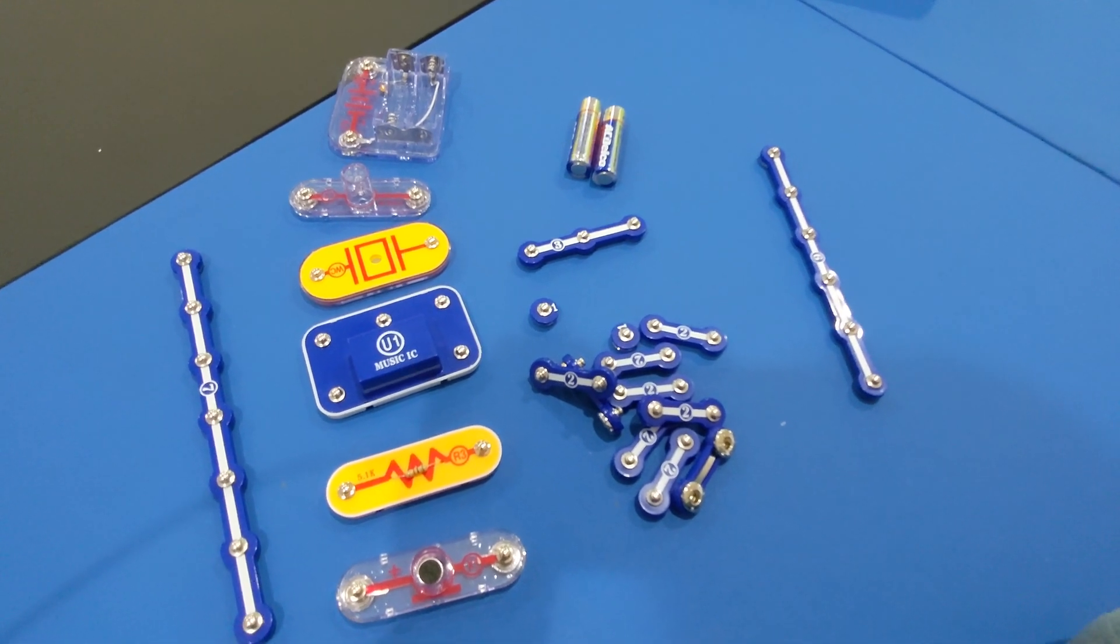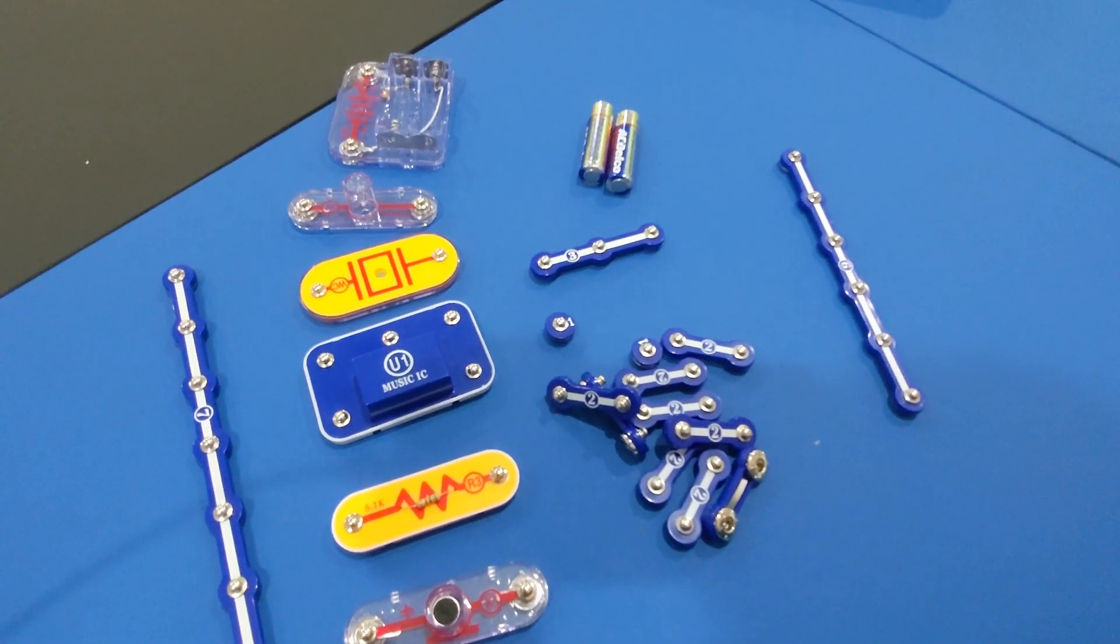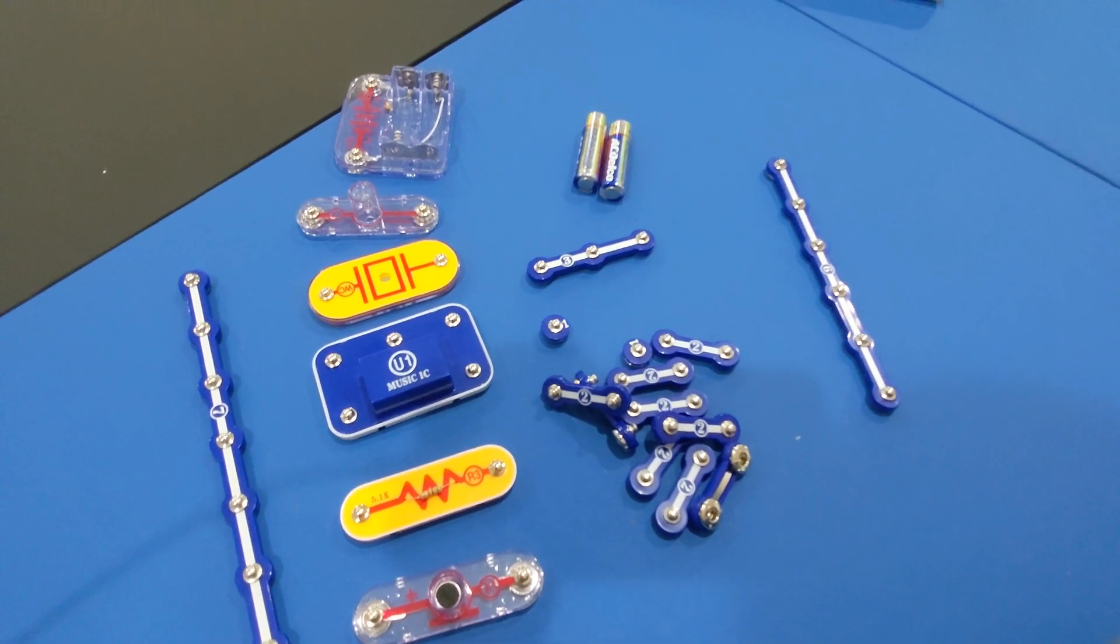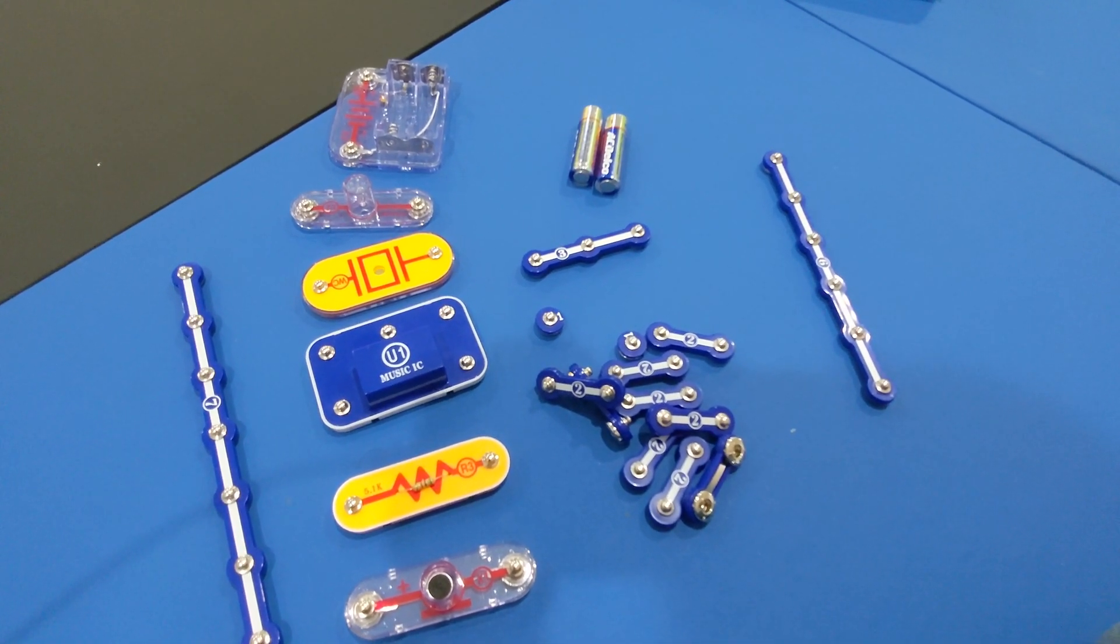All right guys, welcome to another episode of FuzzBoo. Today we're going to take all these parts and turn them into a high sensitivity voice doorbell. This is Project 139 on Snap Circuits.